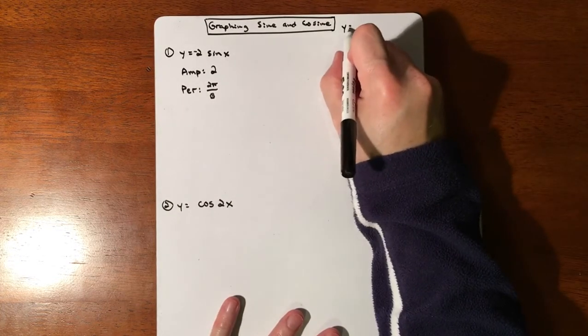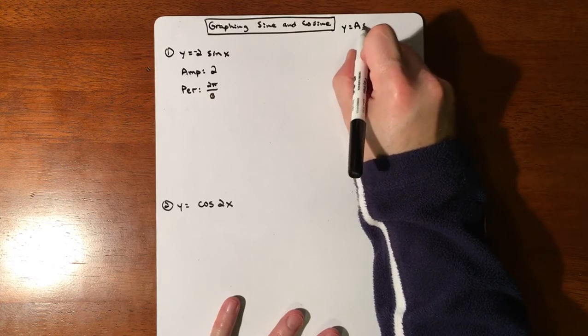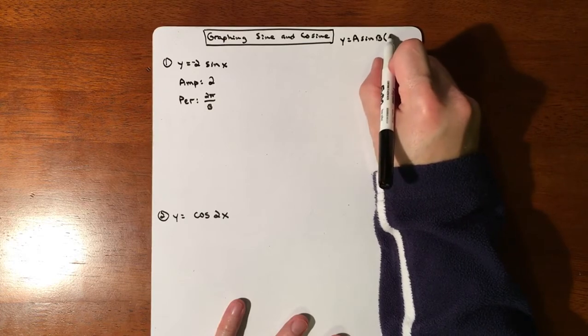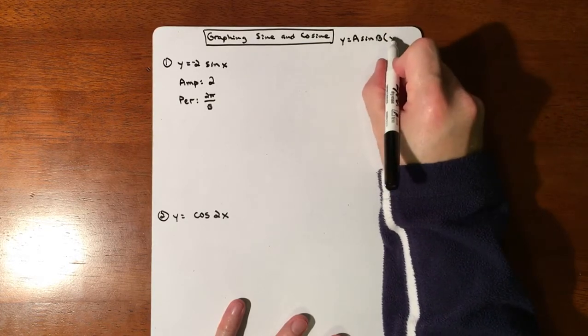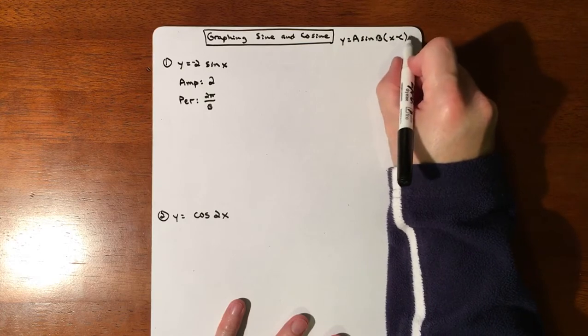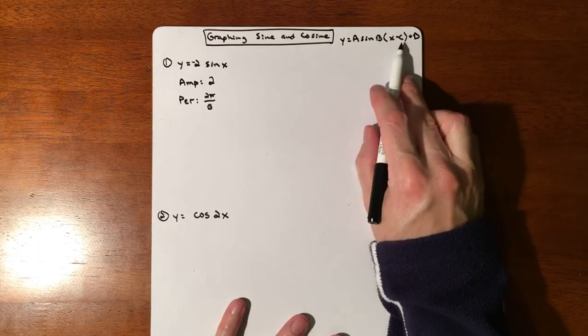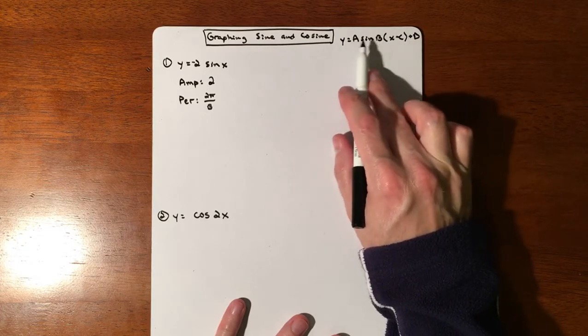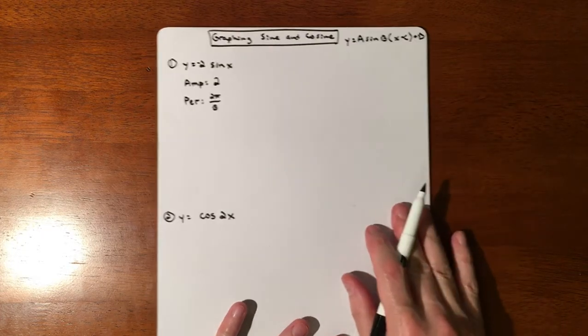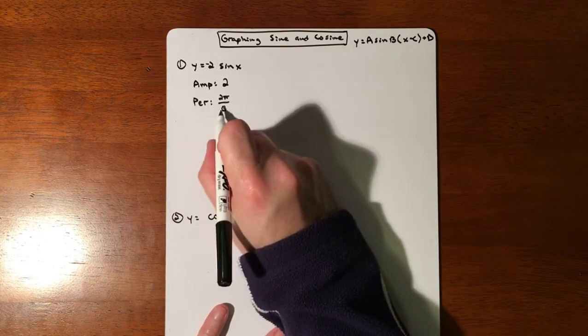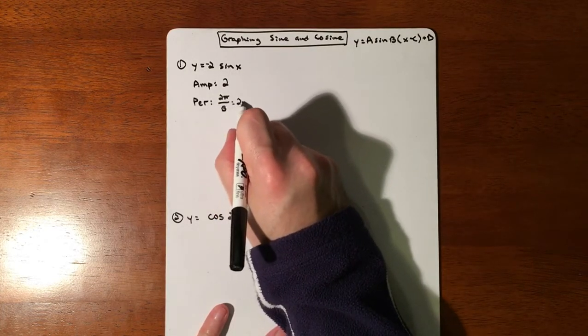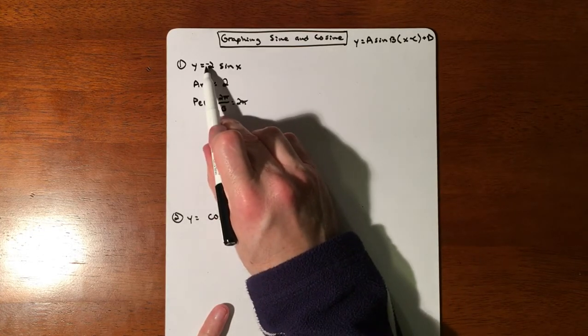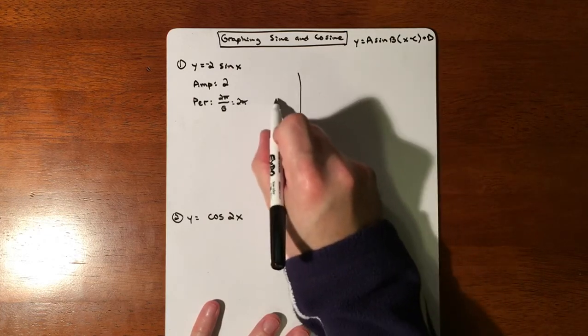And then our period is 2π divided by B. So don't forget that we are looking at this as our generic form. We are just gonna be messing with these two types of values: the amplitude and the period being adjusted. So right now our period is not being adjusted, so nothing is dividing into the 2π. So our period is 2π. Our amplitude is 2 and it's gonna be vertically reflected.